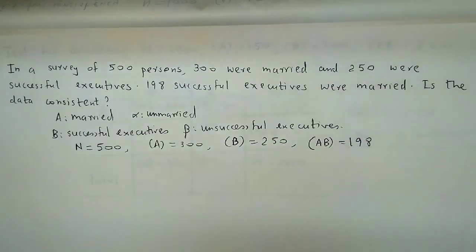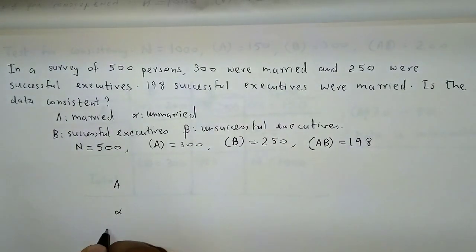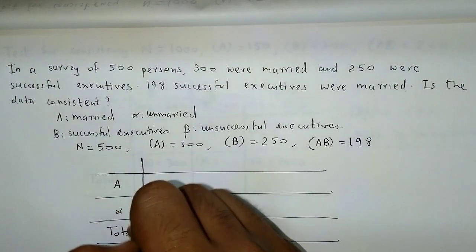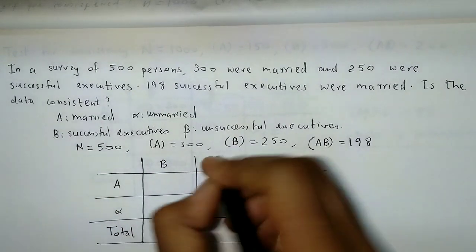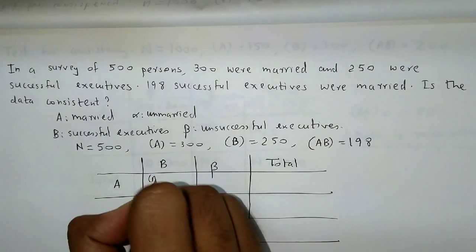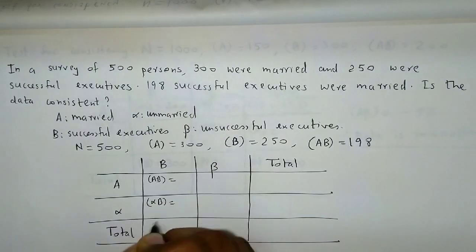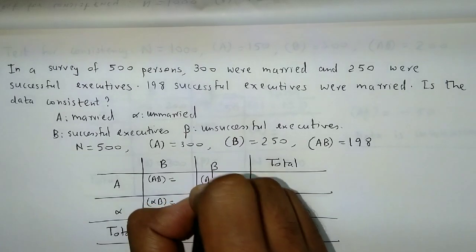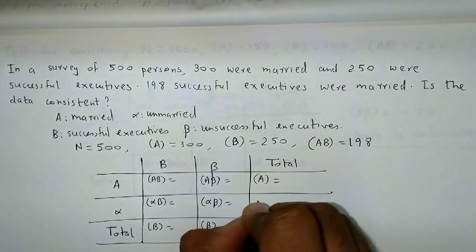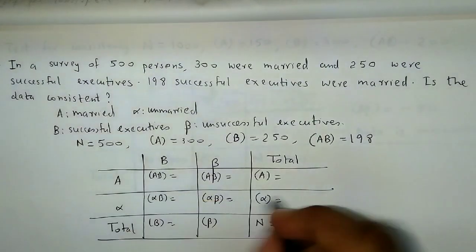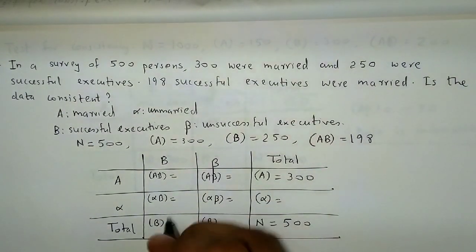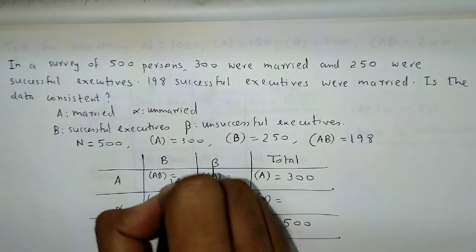Now, again, we can easily prepare the 9-square table. We have columns A, alpha, and total, and rows B, beta, and total. Let's fill up the values: n equals 500 goes in the grand total. Frequency of A is 300, frequency of B is 250, and frequency of AB is 198. Then alpha equals 500 minus 300, giving 200. Beta equals 500 minus 250, giving 250.